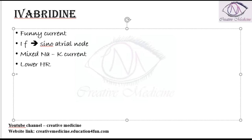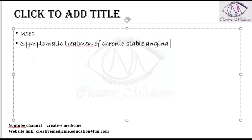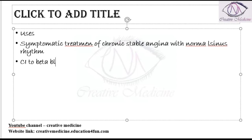The uses of Ivabradine: it is mainly used as a symptomatic treatment of chronic stable angina with normal sinus rhythm. It is also used in conditions where there is a contraindication to beta blockers.